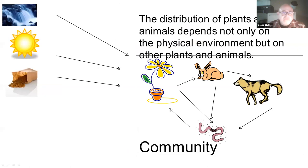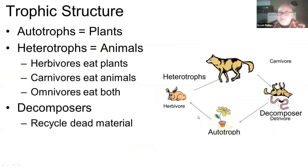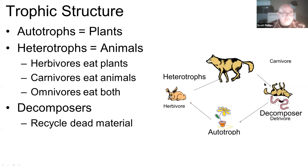When talking about the distribution of plants and animals, it depends not only on the physical environment but also on the presence of other living things. To recap: autotrophs are plants and form the base of the food chain. Heterotrophs are animals — divided into herbivores, which eat plants; carnivores, which eat animals; and omnivores, which eat both. The cycle is completed by decomposers or detrivores, which recycle dead material.